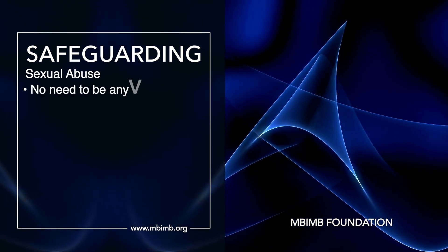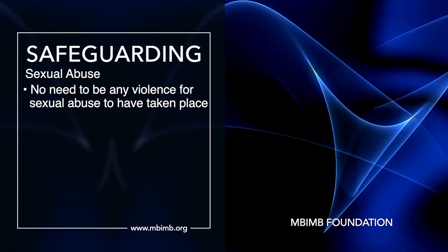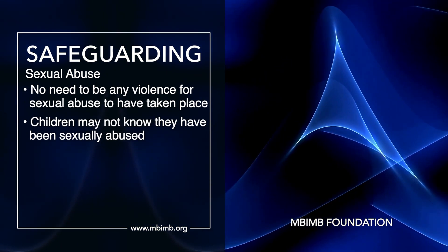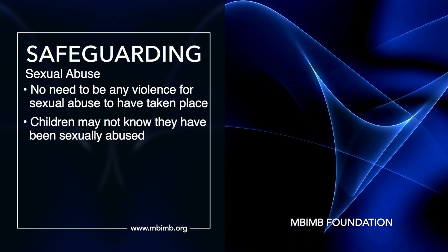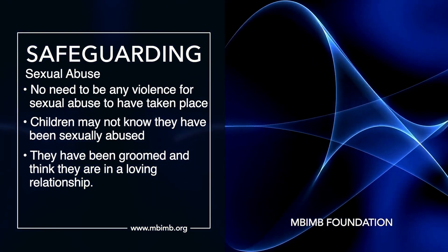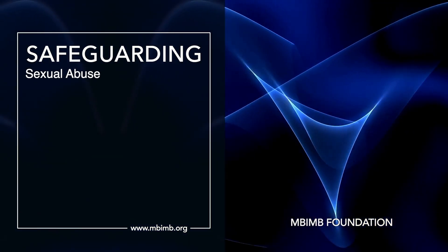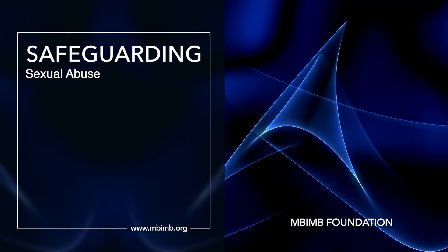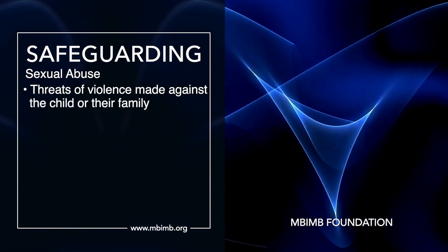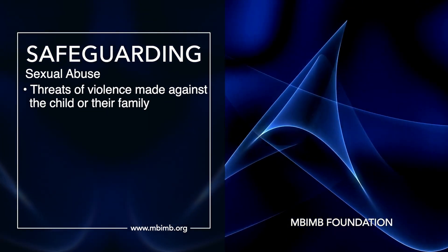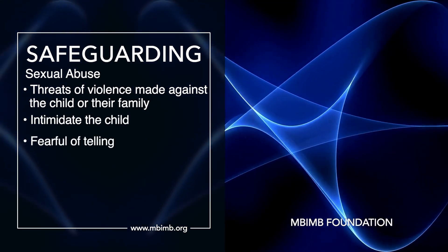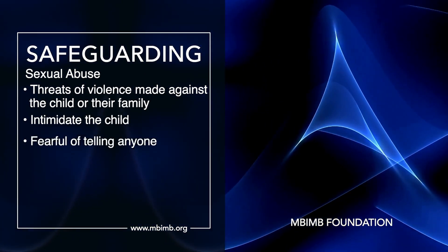There does not need to be any violence for sexual abuse to have taken place. Some children may not know that they've been sexually abused — for example, where they have been groomed and think they are in a loving relationship. Often, to get children to take part in sexual activity, there are threats of violence made against the child or their family. Perpetrators of sexual abuse can also intimidate the child by making them fearful of telling anyone what is happening.